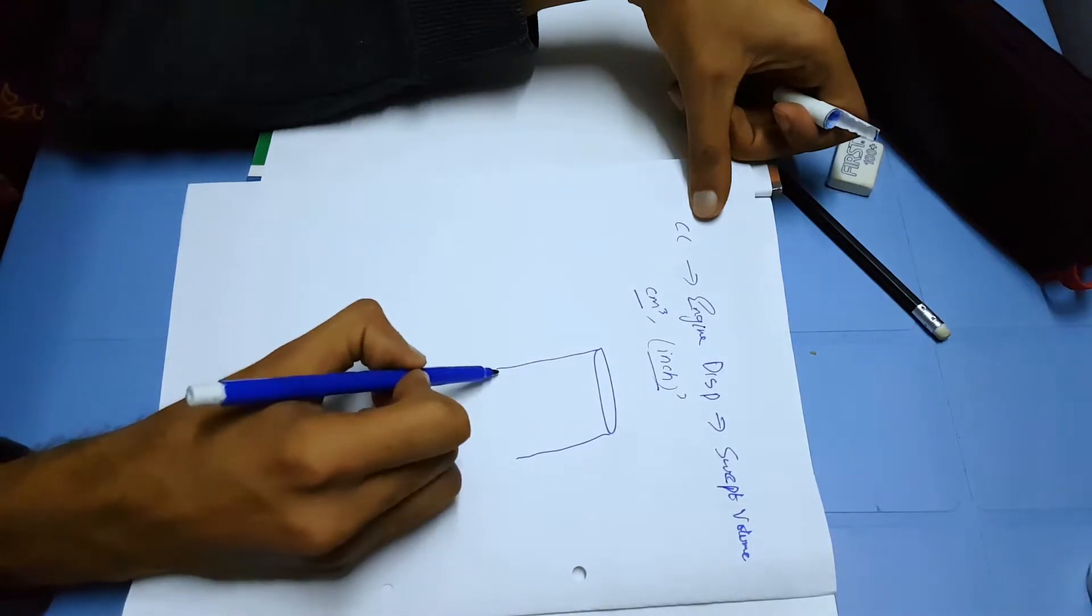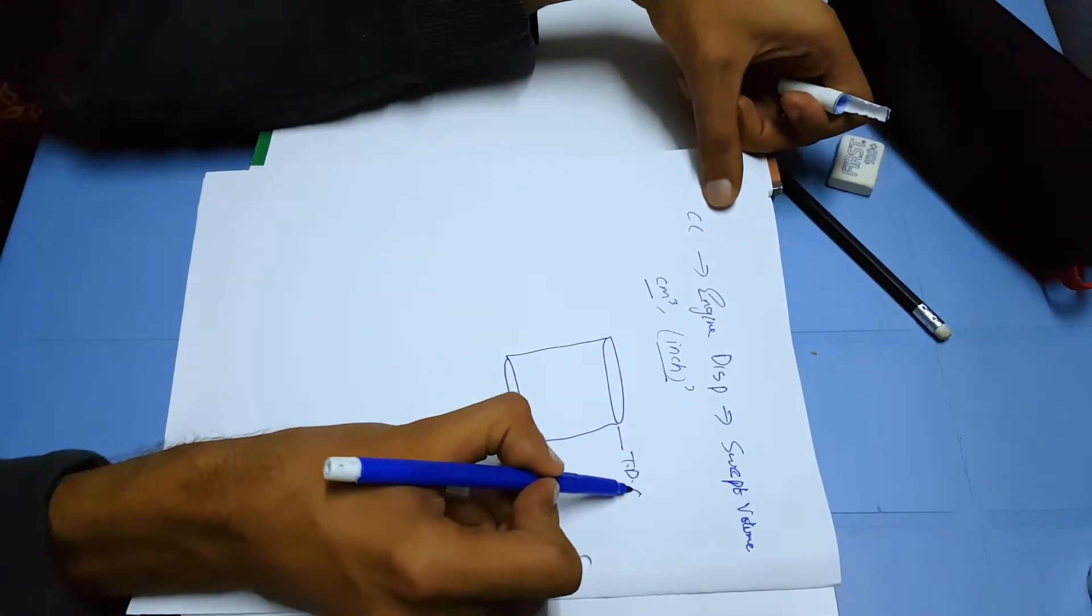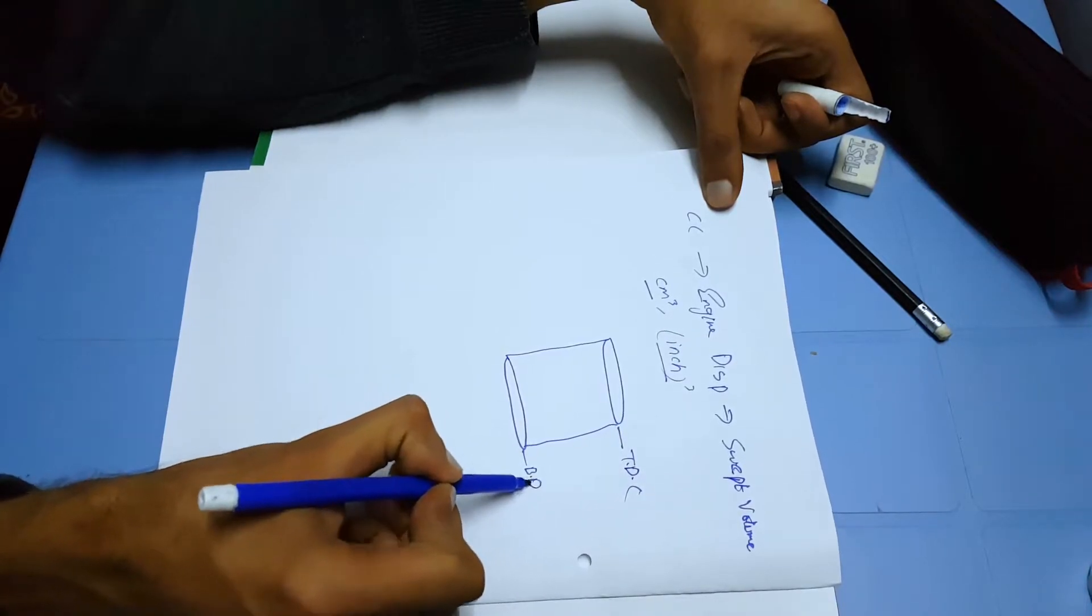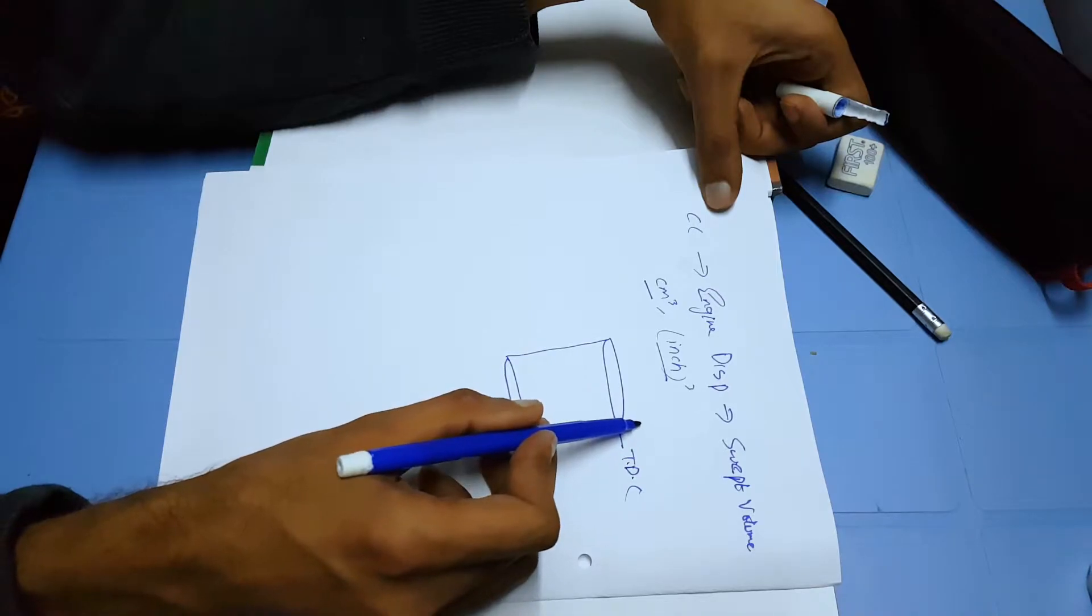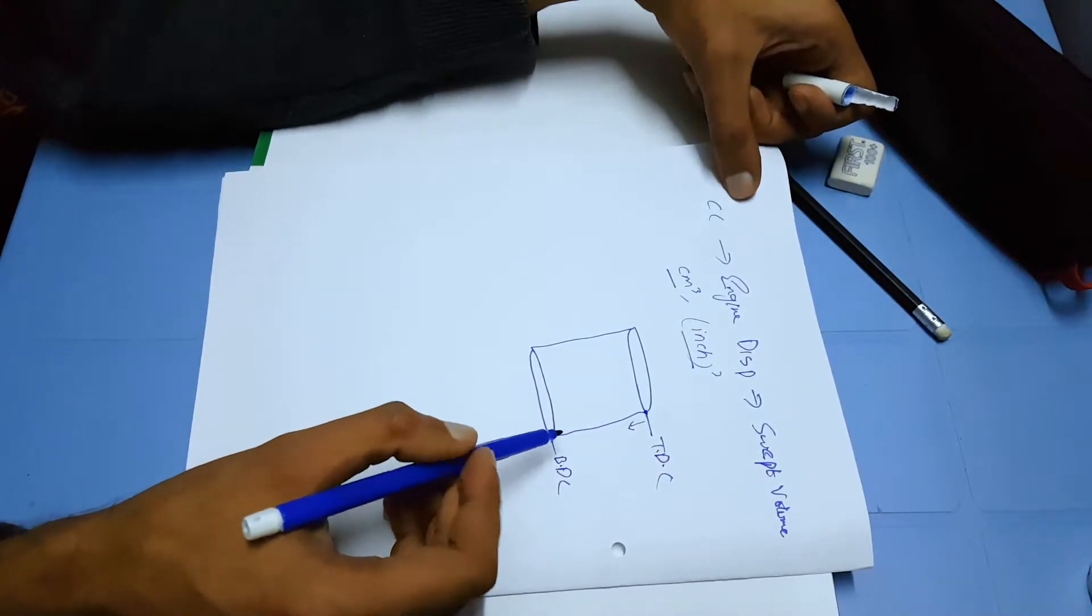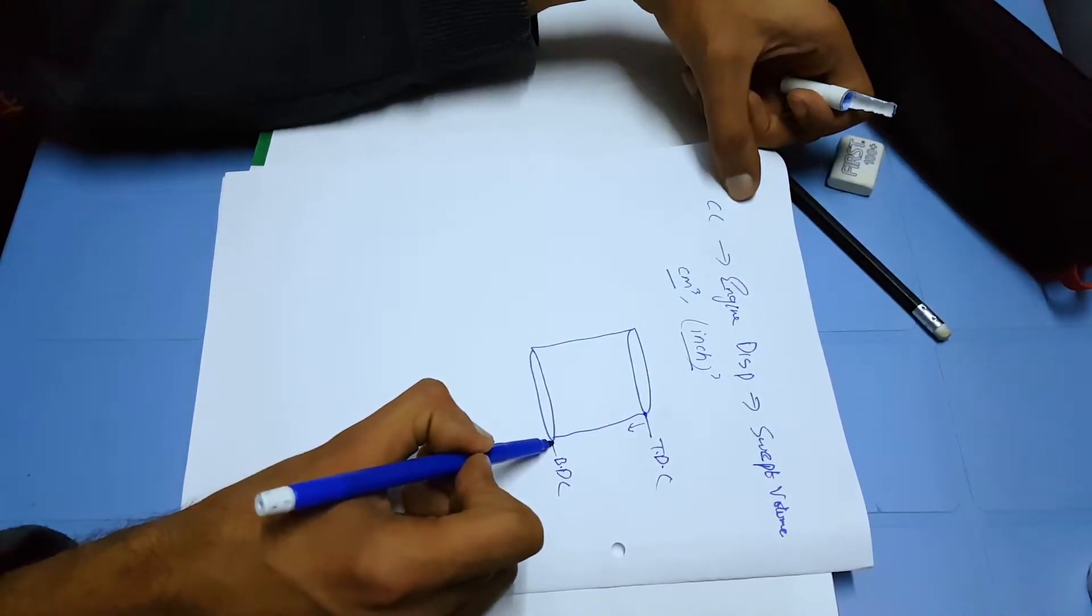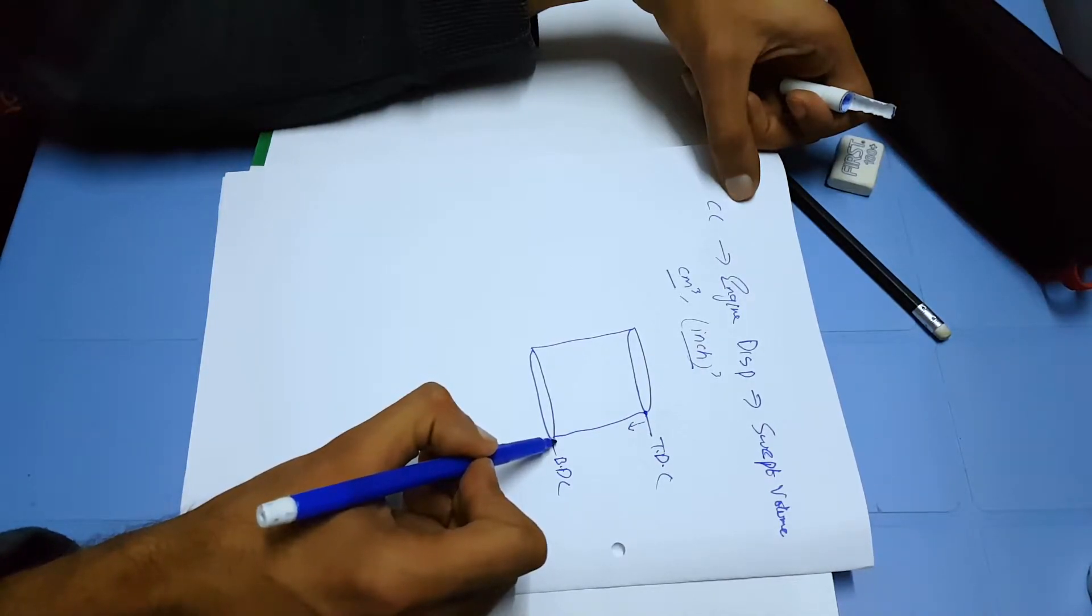This is your top dead center, this is your bottom dead center. Whenever your piston moves to top dead center, it never goes beyond this limit. At this point the velocity becomes zero and it reverses its direction. Similarly at the BDC, velocity becomes zero and the piston does not move beyond this position but just reverses its direction.